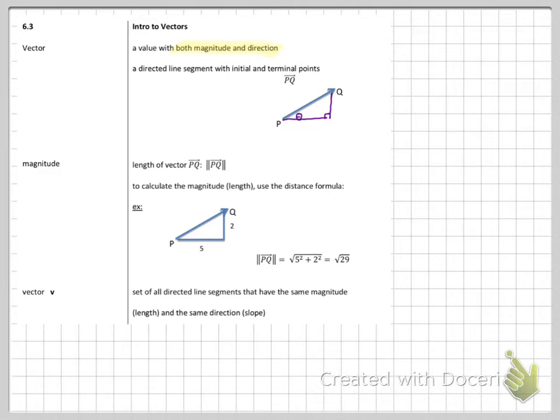So to find the length of a vector or the magnitude, length is magnitude in vectors. It's going to be these double bars. Double bar, PQ, and you draw this like half arrow over it when it's a vector. Or see this V down here? Bold is another way to name a vector. So double bar of a vector means you're finding the magnitude or the length of it. And you're going to use the distance formula, which is just Pythagorean theorem. So in this example done down there, the magnitude of PQ would be root 29.